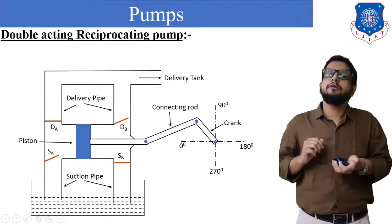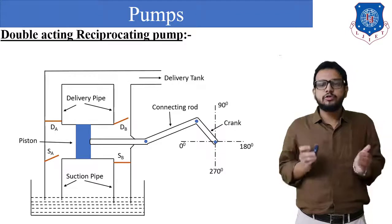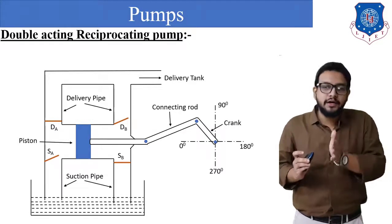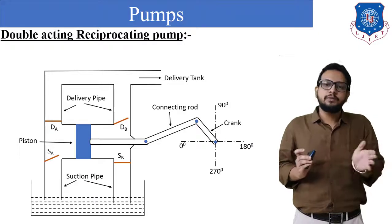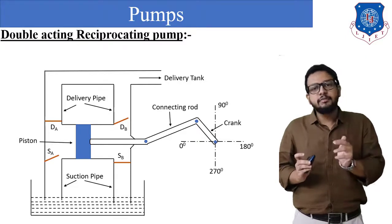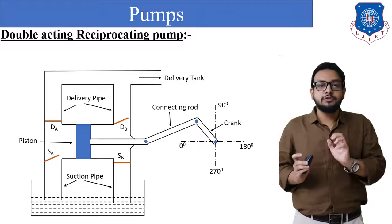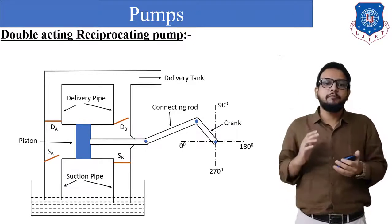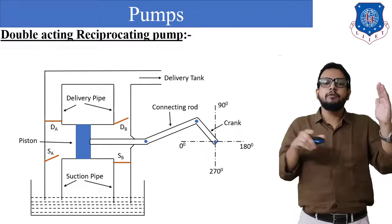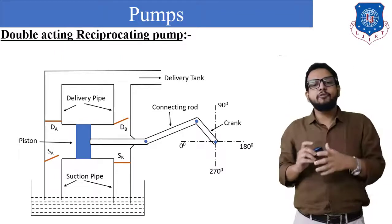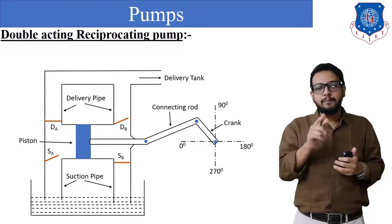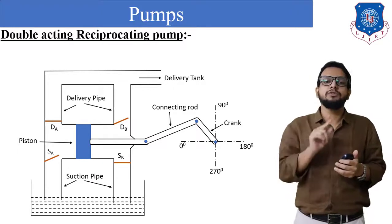In the reverse stroke, the crank moves from 180 degrees to zero degrees. The piston moves from outer dead center towards inner dead center, that is, from right side towards the left side. On the left side of the piston, pressure will be exerted on the water stored. At the same time, on the right side, a vacuum will be created. Suction valve Sb will open, and on the left side delivery valve Da will open, delivering water into the delivery tank. Water is sucked from the sump through valve Sb.